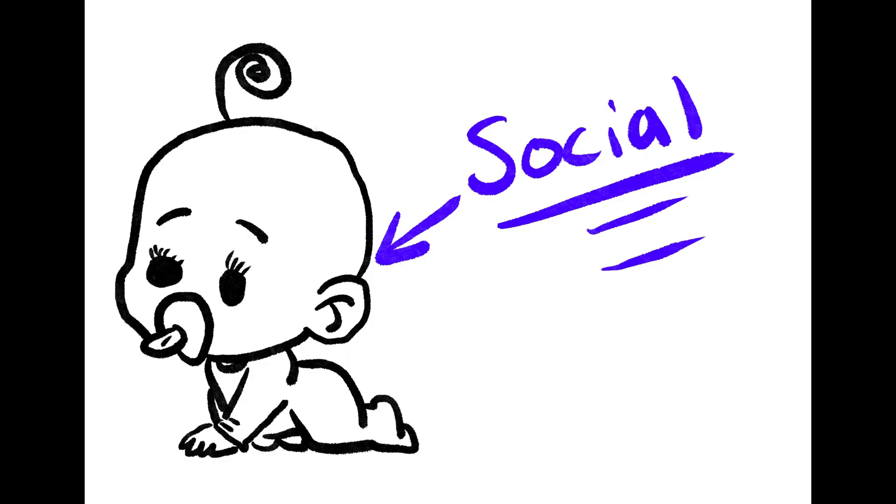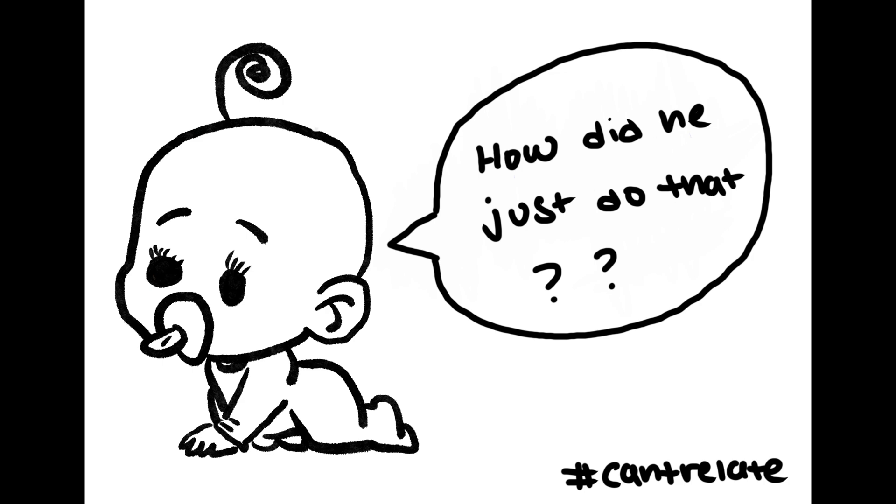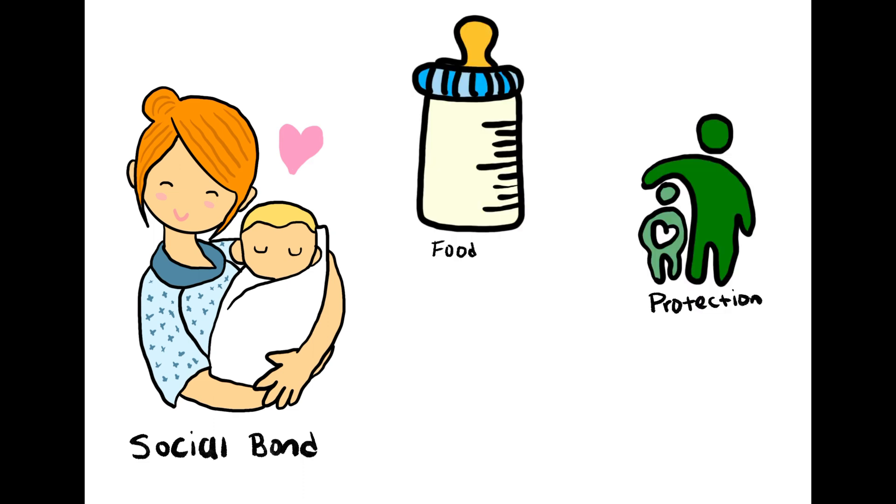Humans are social creatures from the moment they are born. Unlike some animals whose offspring are essentially self-sufficient after birth, newborn human infants cannot survive without the care and protection of others. A social bond is formed with the caretaker as they provide the infant with food, protection, and social interactions that are essential for healthy development.